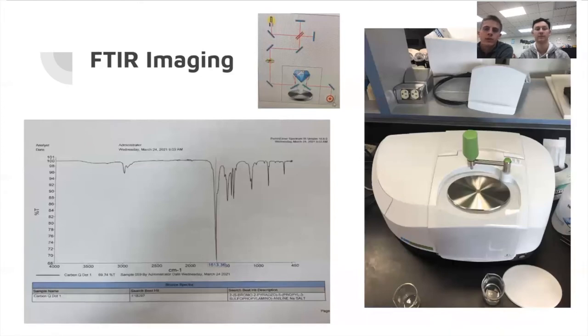Another test we did was using FTIR imaging, and this was done at the University of Pikeville with Dr. Hess. We placed our sample on the machine here in the bottom right, and this device takes light and puts it through a diamond, and the light emitted from our substance shows the compounds within our solution. What we collected here over on the bottom left is a graph showing this large peak, which is a carbon-oxygen bond, which is exactly what we're looking for in carbon quantum dots.